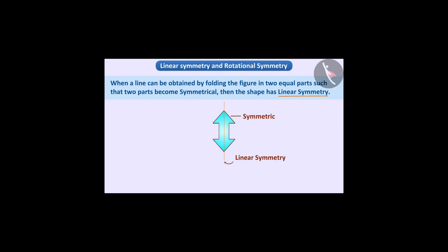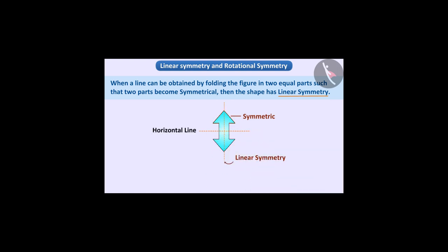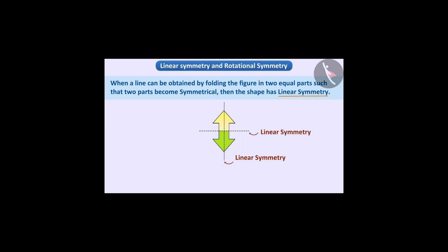Similarly, we can also draw a horizontal line in this shape which divides it into two equal parts which are mirror reflections of each other, so it is also a symmetric line. Apart from these two lines, there is no other line that shows linear symmetry in the figure. Therefore, we can say that this figure has two symmetric lines.